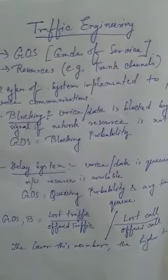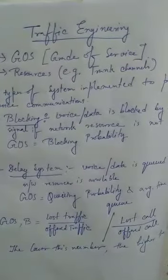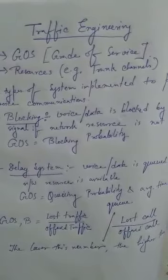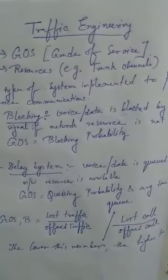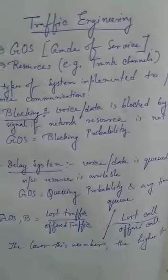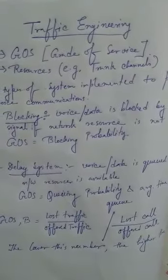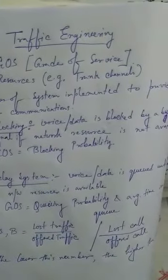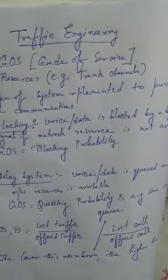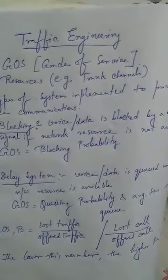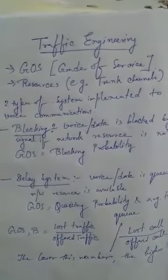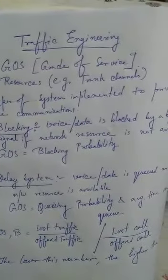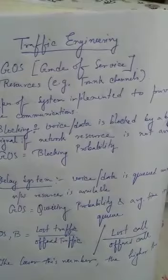In the case of blocking, voice or data is blocked by a busy signal if the network resource, i.e., the channel, is not available. In that case, Grade of Service equals the blocking probability. For the delay system, voice or data is queued until a network resource is available. In that case, Grade of Service equals the queuing probability and average time in queue.